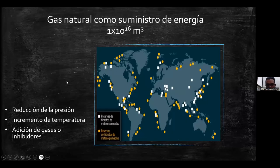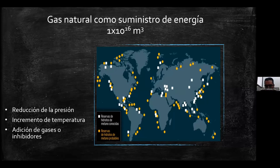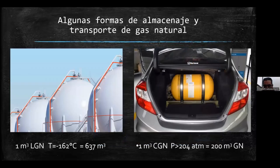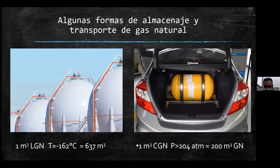Actualmente, la demanda de energía en el mundo se está incrementando. Una alternativa a esa demanda es el uso de gas natural. Se estima que alrededor del mundo existe 1×10¹⁶ metros cúbicos de este gas. El problema sería el transporte y el almacenamiento. Las formas comunes de transportar y almacenar este gas son mediante el licuado del gas y por la compresión; se sabe que 1 metro cúbico de gas licuado equivale a 637 metros cúbicos a condiciones estándar.